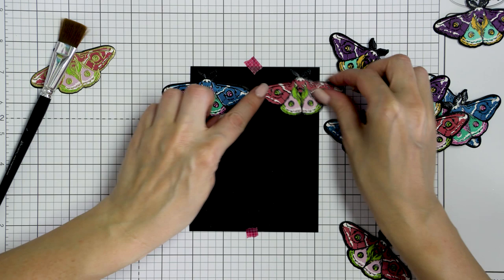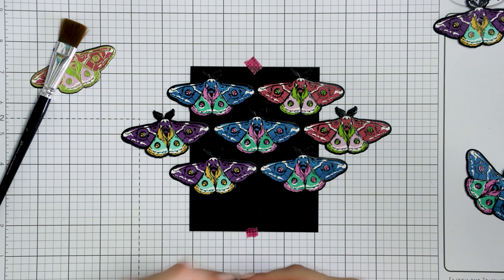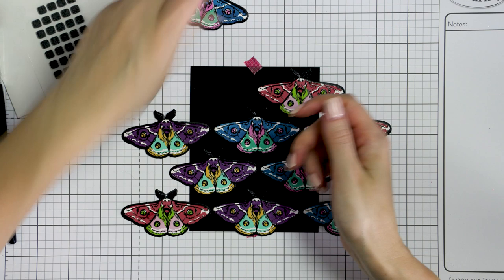Having heat embossed all of the butterflies, I started arranging them on a black cardstock panel cut to 4.25 by 5.5 inches. This will make the front of my card. With the butterflies arranged, I used black foam adhesive and foam mounted them one by one onto the panel. Using black foam adhesive ensures that the foam squares will not be visible from the side of the card.